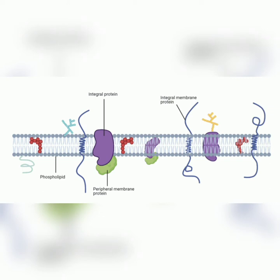The structure you are seeing is the fluid mosaic model. It was proposed by Singer and Nicholson. It proposes that membranes are lipid bilayers — meaning there are two layers of phospholipid — within which proteins will float. There are different types of proteins, some of which are integral proteins and some of which are peripheral membrane proteins.